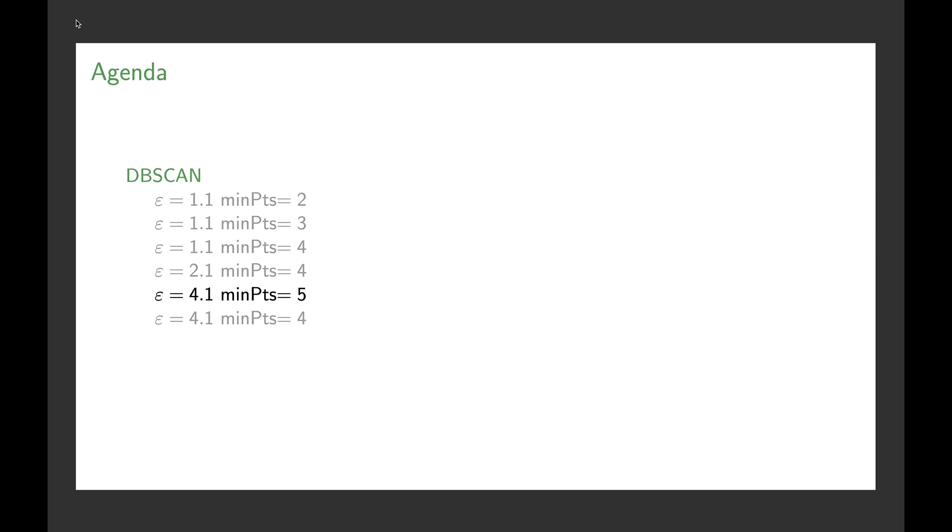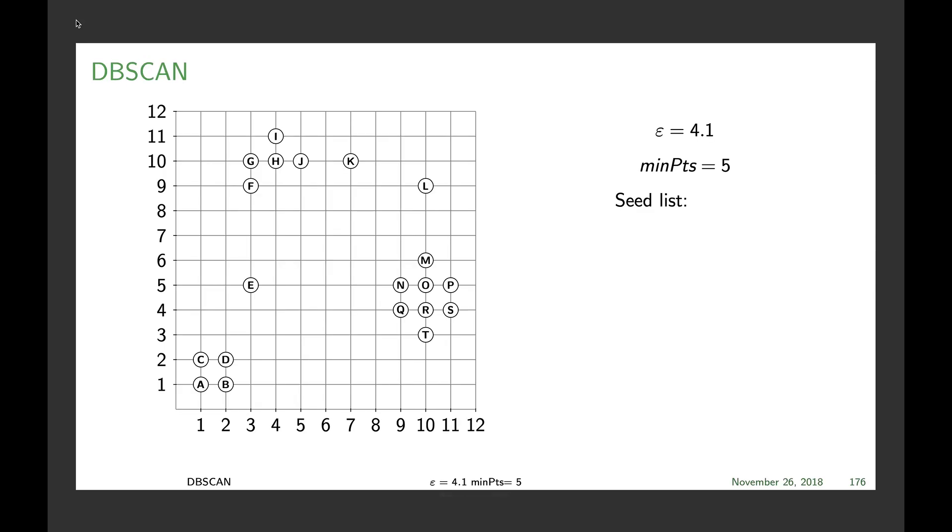Now we work with an epsilon of 4.1 and minPts 5. That should make the entire corner at the bottom noise points for the moment. We will see if they remain those, and it seems that's not the case. D will become a core point, making E a border point.